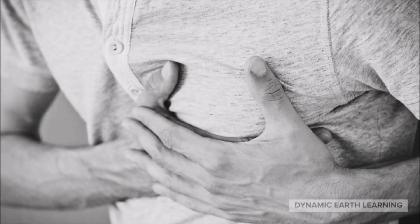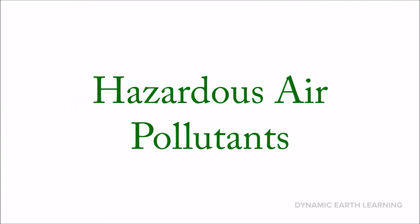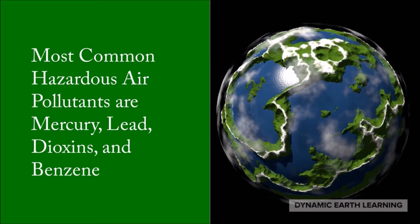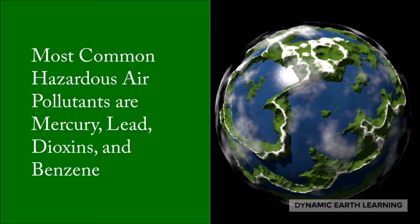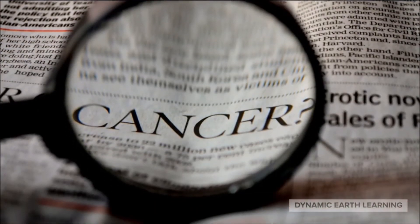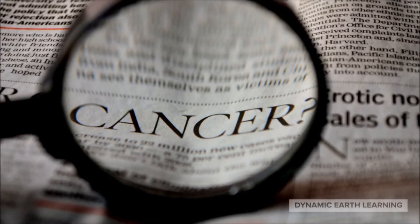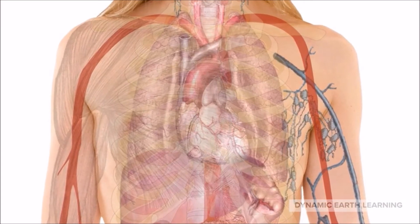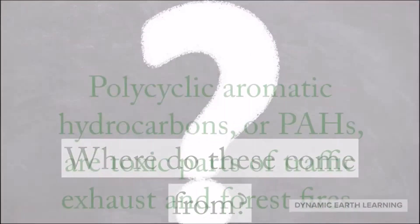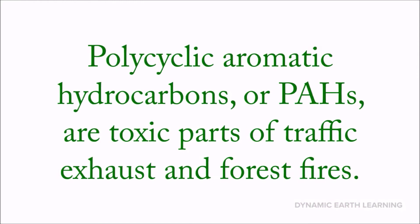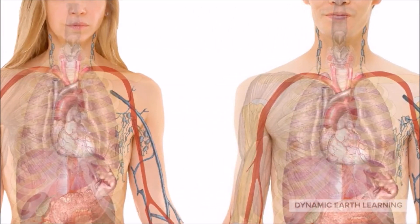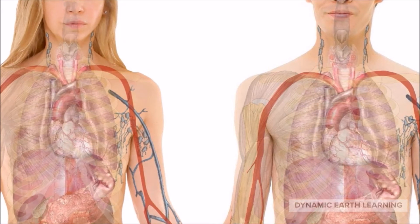The next source of air pollution is hazardous air pollutants. Some of the most common are mercury, lead, dioxins, and benzene. Benzene is classified as a carcinogen by the EPA, meaning it's capable of causing cancer. It causes eye, skin, and lung irritation in the short term, and blood disorders in the long term. Polycyclic aromatic hydrocarbons, or PAHs, are toxic parts of traffic exhaust and forest fires. People are usually exposed to mixtures of PAHs, and in large amounts they've been linked to irritation of the eyes and breathing passages.